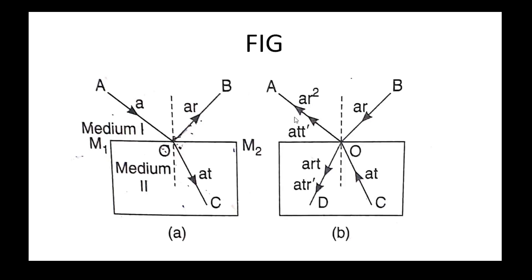The wave is partly reflected and partly transmitted — reflected along OB direction, transmitted along OC direction. The reflected wave here has amplitude AR. When the incident wave of amplitude AR hits the boundary again, multiplying by reflection coefficient R gives amplitude AR squared.